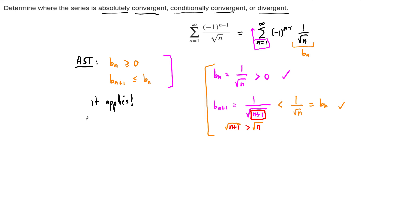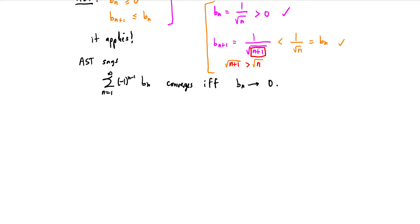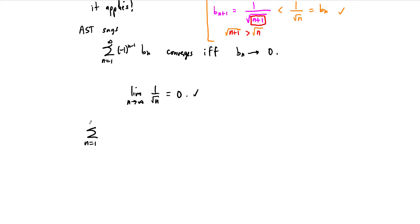So what does the alternating series test tell us? Under these conditions, it says that the series — the sum as n goes from 1 to infinity of negative 1 to the n minus 1 times b sub n — converges if and only if the limit of b sub n is 0. So we need to take the limit as n approaches infinity of the b sub n term. Once we've taken b sub n out of the series it becomes a sequence, and there's only one kind of limit that makes sense. The limit as n approaches infinity of 1 over square root n: as the denominator gets very large, the whole thing gets very small, and this is 0. So by the alternating series test, the series does indeed converge: the sum from n equals 1 to infinity of negative 1 to the n minus 1 over square root n is convergent.